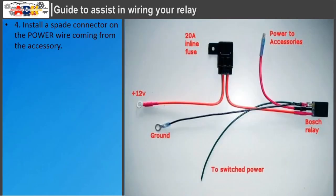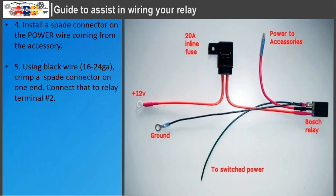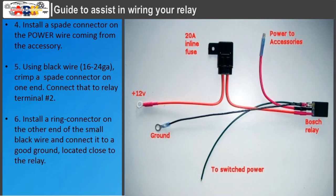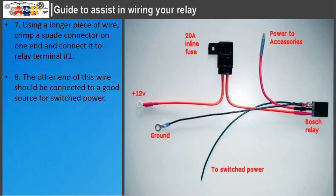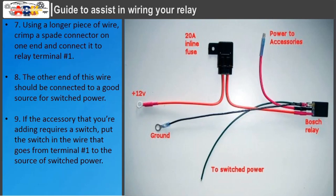Step 4: Install a spade connector on the power wire coming from the accessory. Step 5: Using black wire, crimp a spade connector on one end and connect that to relay terminal number 2. Step 6: Install a ring connector on the other end of the small black wire and connect it to a good ground located close to the relay. Step 7: Using a longer piece of wire, crimp a spade connector on one end and connect it to relay terminal number 1. Step 8: The other end of this wire should be connected to a good source for switched power. Step 9: If the accessory requires a switch, put the switch in the wire that goes from terminal number 1 to the source of switched power.